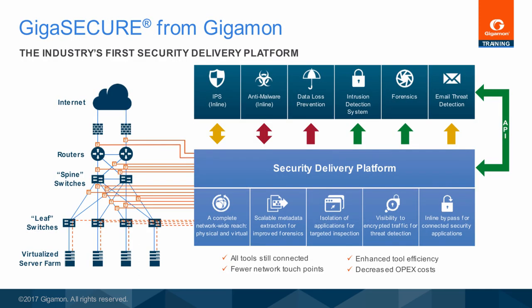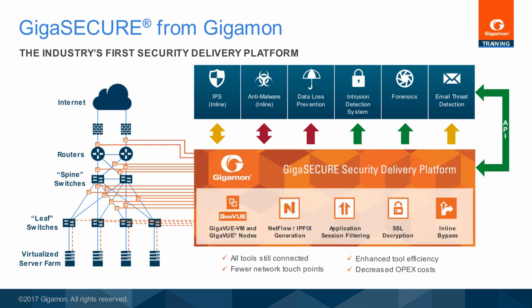Deploying security tools to address present and future threats can be problematic. There are multiple points of failure, traffic bottlenecks, and scalability challenges. To address these challenges, the Gigaview HB1 hosts key features in support of the GigaSecure Security Delivery Platform — the industry's first security delivery platform. Examples include NetFlow Generation, Application Session Filtering, and SSL Decryption. Refer to the GigaSecure Training Module available in the GigaTech Training Series for more information about GigaSecure.